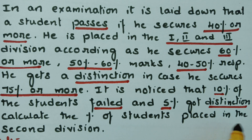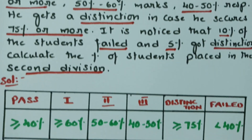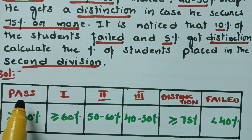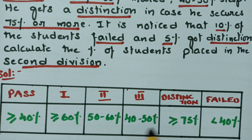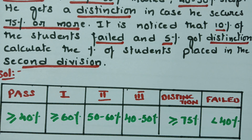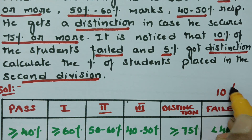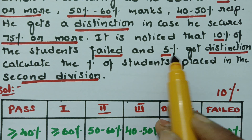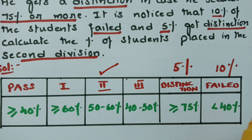It is noticed that 10 percent of the students failed and 5 percent got distinction. With this data, we have to calculate the percentage of the students placed in the second division. To summarize: passing requires 40 percent or more, first division 60 percent or more, second division 50 to 60 percent, third division 40 to 50 percent, distinction 75 percent or more, and failure is below 40 percent.